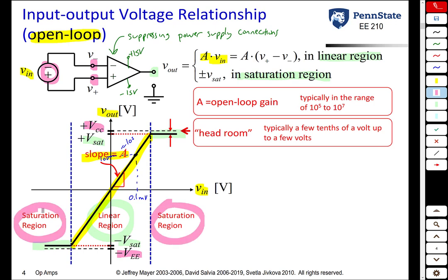The difference between the power supply voltage and the saturation voltage is called the headroom. The headroom might be a tenth of a volt, two tenths of a volt, or even a couple volts — it varies from op-amp to op-amp. So if powered by plus or minus 15 volts, the saturation voltage might be plus or minus 14.5 volts. For the most part, we want to operate in the linear region and avoid saturation. There is one exception: a comparator circuit, where you do want to operate an op-amp in the saturation region.